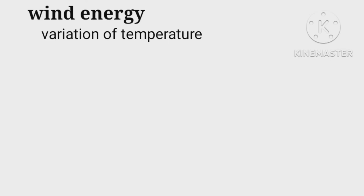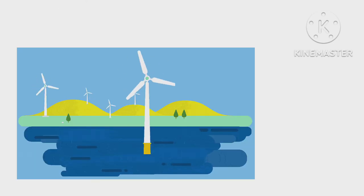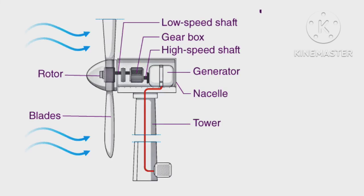Wind energy is harnessed by rotatory structures known as windmills. A big fan attached with huge blades very high on a rigid support is attached to turbines that rotate due to high speeds of wind and generate electricity.